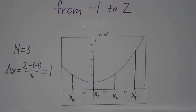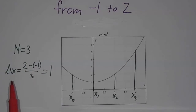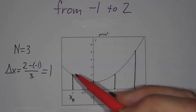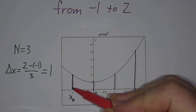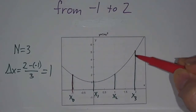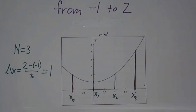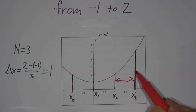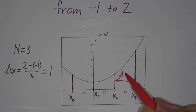In all cases, we've got three pieces, so our delta x is 2 minus negative 1 over 3. We're trying to figure out the area from here to here, breaking it up into three pieces, and the width of each piece is delta x, which is 1.